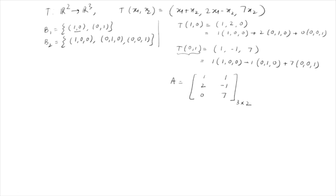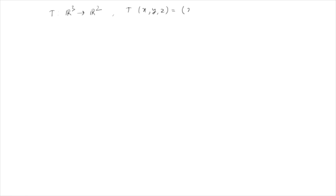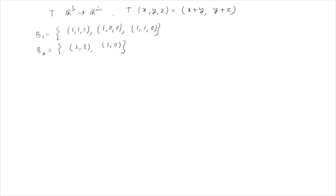The second example: determine the matrix of T with respect to bases B1 and B2, where T from R³ to R² is given by T(x, y, z) = (x+y, y+z). B1 is the basis of R³ given as {(1,1,1), (1,0,0), (1,1,0)}, and B2 is the basis of R² given as {(2,3), (1,0)}. With respect to different bases, the matrix of the same linear transformation will be different. The order of the matrix will be 2×3.